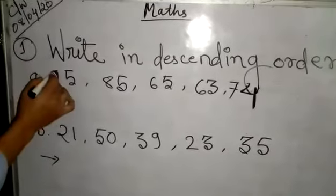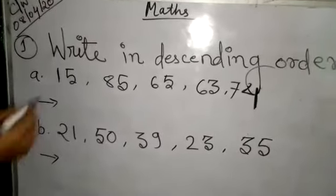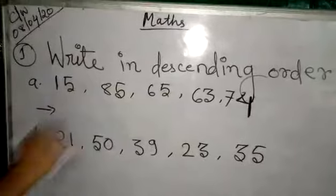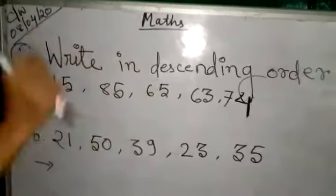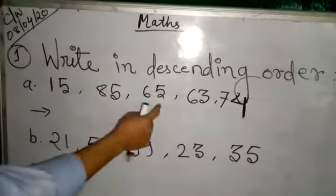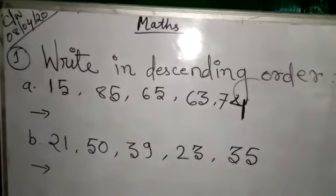Now here, like yesterday it is very easy to find out bigger number. First make sure that all the numbers are in 2 digits or same digit. Here is 1, 2, 2 digits, here also 2 digits, 1, 2, here also 2 digits, 2 digits and 2 digits. So all the numbers are in 2 digits.